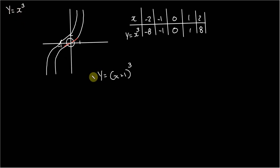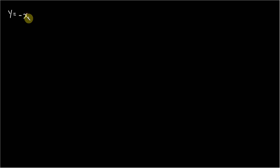So those are the two key things to remember: firstly, the general shape of y equals x cubed; and secondly, how graph transformations apply to functions of this form. This means we can sketch and interpret graphs of cubic functions very quickly and easily. Let's consider a first example: y equals negative x cubed.